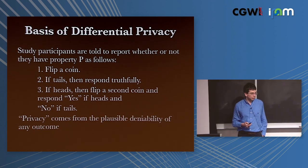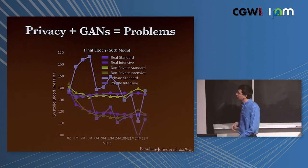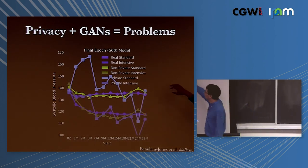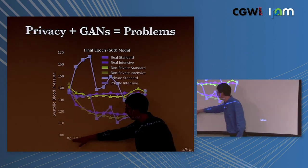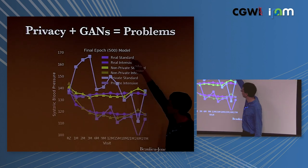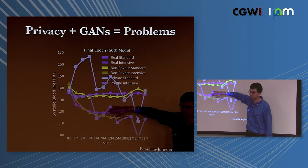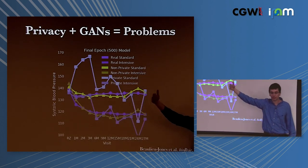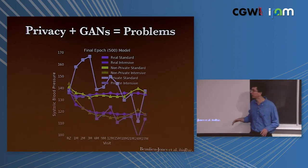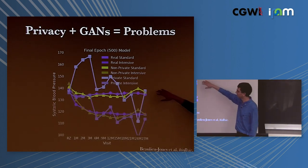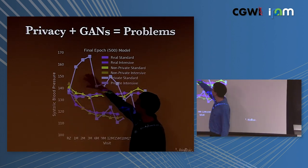The framing is that sometimes you get real information from participants and sometimes false information - if you do this in the right way and quantify it, you can figure out how much you're leaking an individual's privacy. In the GAN, we add noise and control how much any individual can contribute to the gradient. The downside is that it doesn't really work. Adding differential privacy to GANs, at least in our hands, essentially breaks the GAN - blood pressure spikes to insane levels in the generated data.